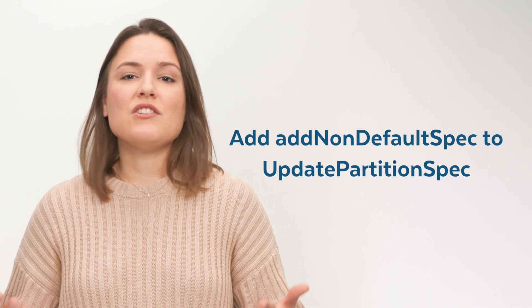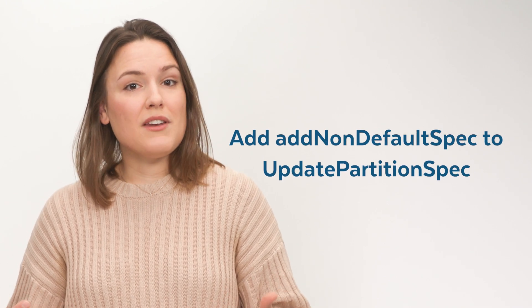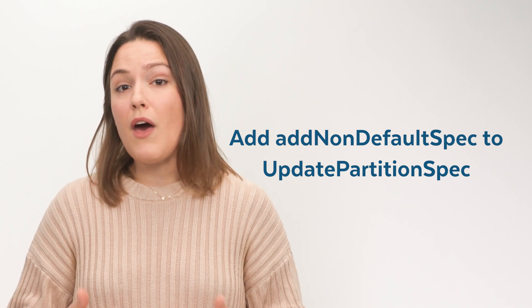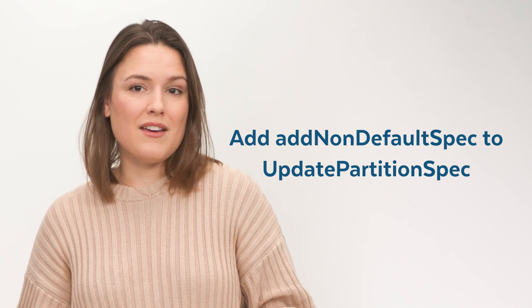The next change gives you more flexibility in how you manage partition specs by giving you the ability to create a new partition spec without setting it to the default spec. Once the new spec has been added, users can reference the new spec via its spec ID in the right APIs. This is great for users interested in developing a table with multiple partition specs — for example, creating a table where recent data is partitioned by hour, but older partitioning is done by month. Now new specs can be added without disrupting existing workloads.